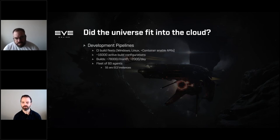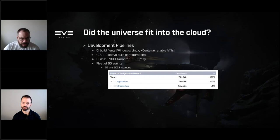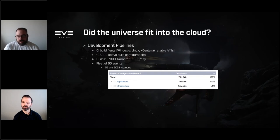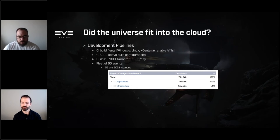We roughly have 16,000 active build configurations using TeamCity, about 78,000 builds a month — roughly 2,000 builds a day. We wound up with a fleet of 60 agents, 55 of which are EC2 instances spun up and down based on whether we need Linux or Windows. Looking at how to save costs, we couldn't really reserve those instances because the math didn't work — agents spin up on demand when everyone commits to Perforce in the mornings, triggers a bunch of builds, and then everything dies off around six or seven in the evening.